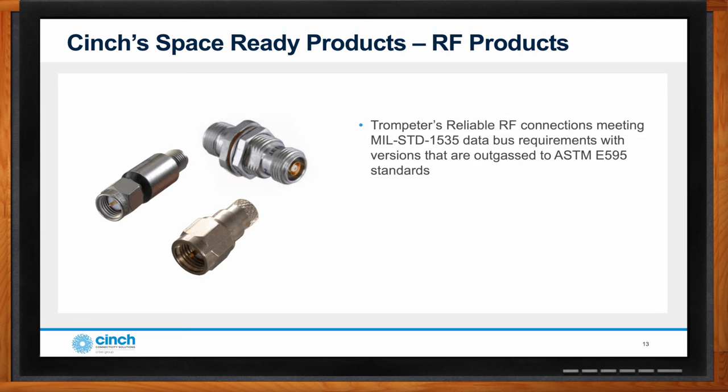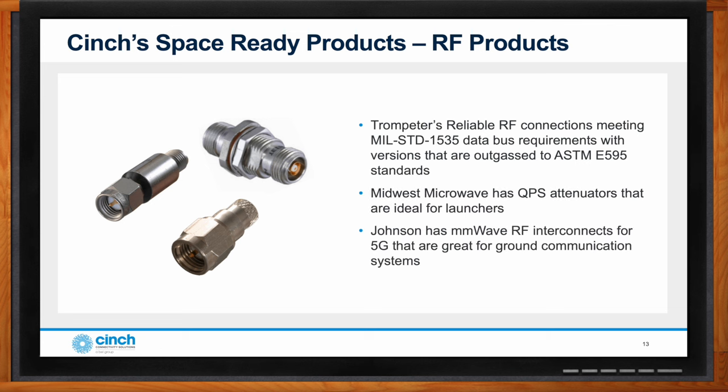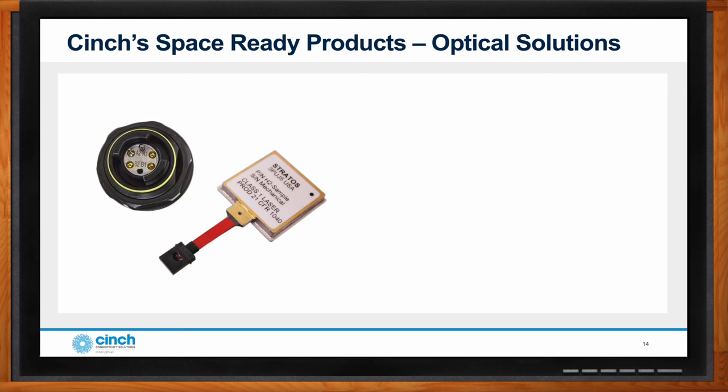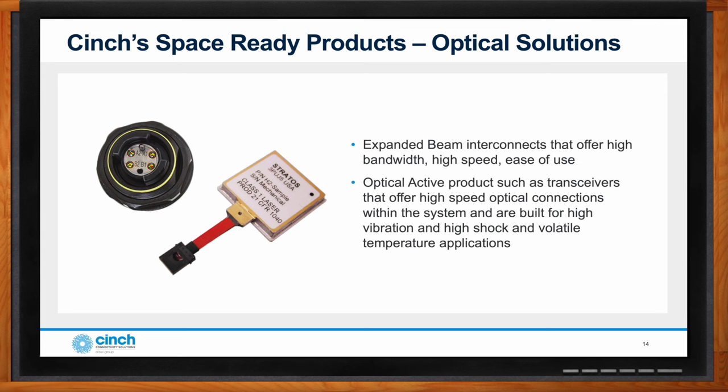On the RF side, we have space-ready, space-proven products for high-frequency signal transmission in space, including MIL-STD-1553 data bus products, microwave RF attenuators, and millimeter-wave products up to 110 GHz — used not just in space but also for ground-to-space communications and supporting launches. For high-speed, large-bandwidth needs, we also consider optical solutions instead of copper.